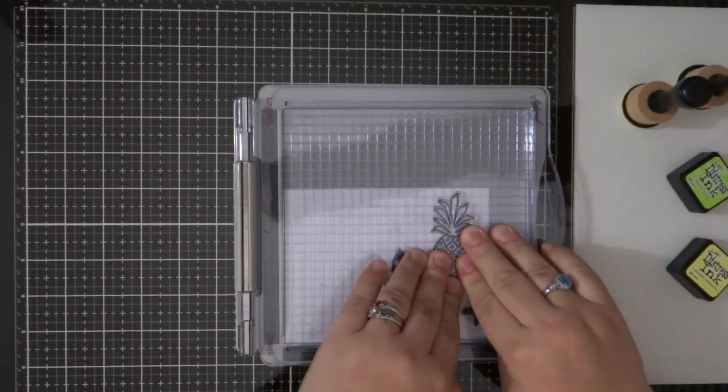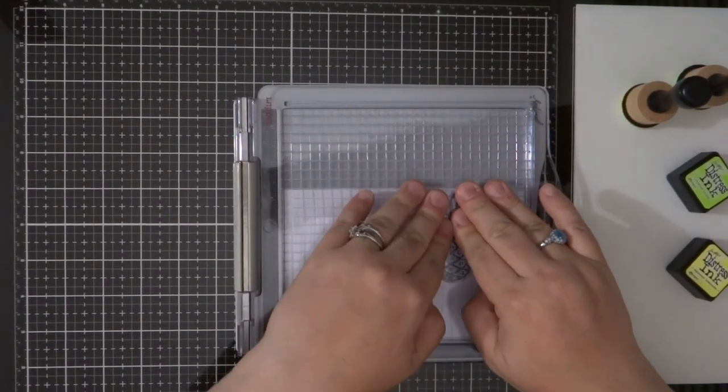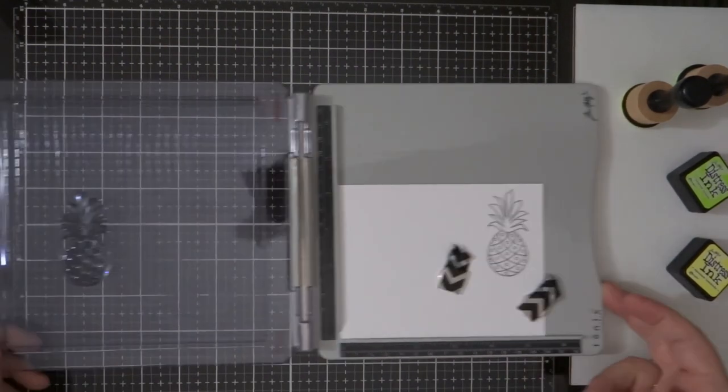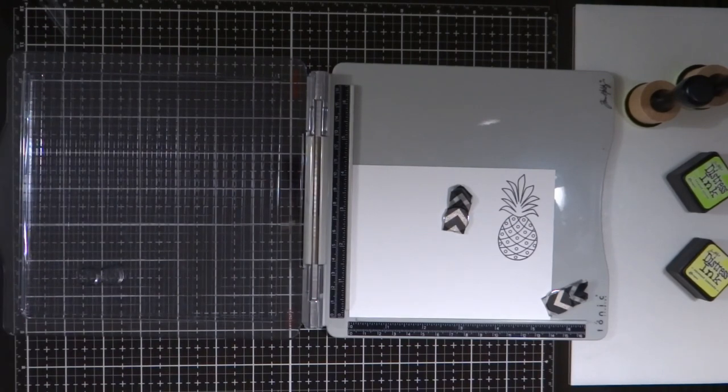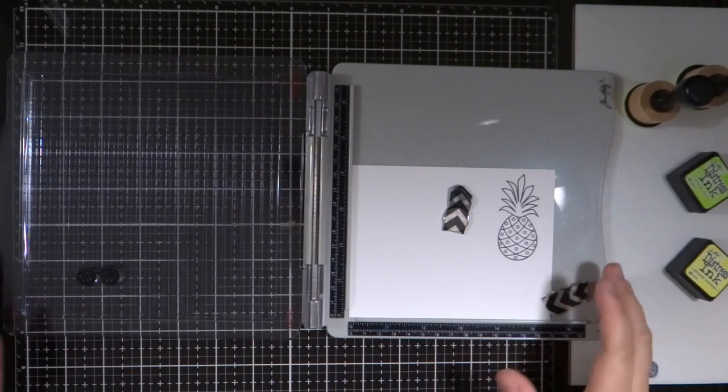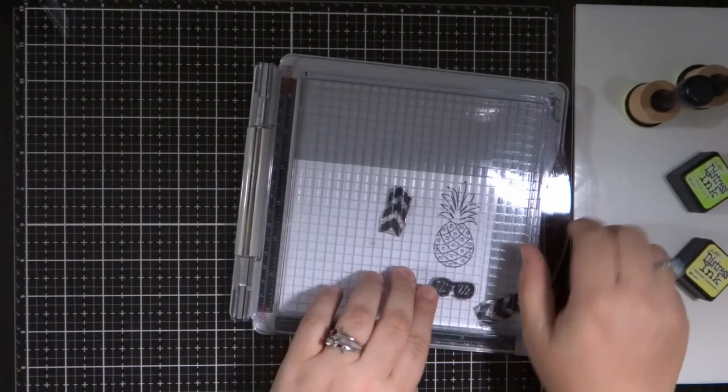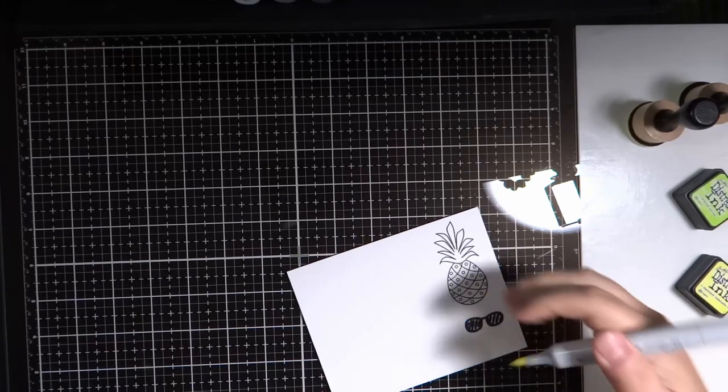This stamp set from the Simon Says Stamp monthly card kit, the July 2018 one, has a really cool little pineapple. And I'm going to stamp that one with Simon Says Stamp ink. And this is onto a piece of 80 pound card stock from Neenah. And I'm also going to stamp the sunglasses.